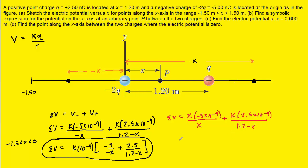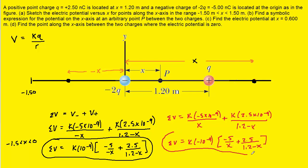As before, we factor out k times 10 to the minus 9, leaving negative 5 over x plus 2.5 over 1.2 minus x. This equation gives the total potential anywhere between the origin and 1.2, so we note that domain beneath the function.